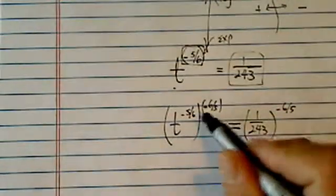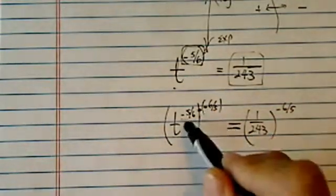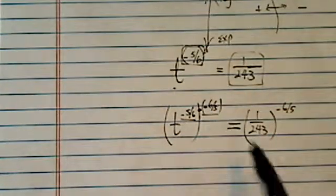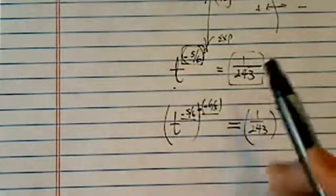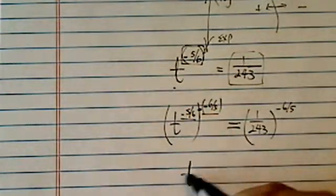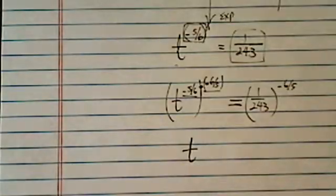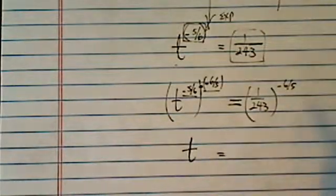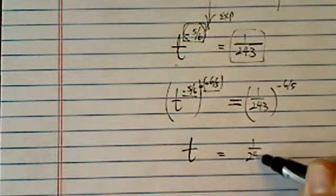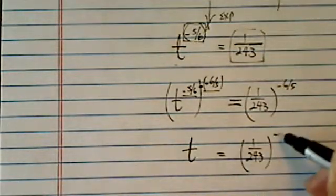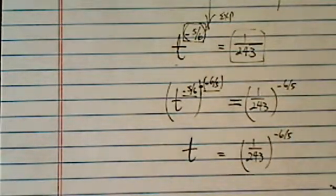So from here, the property says that if you have two exponents, one after the other one on the hat position, you just multiply them. Then t gets liberated by itself. And then now all we have to do is simplify this ugly thing on this side. It does look kind of ugly.